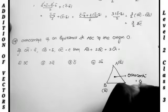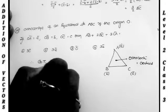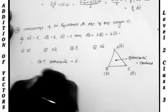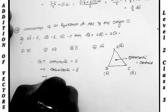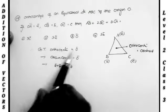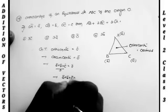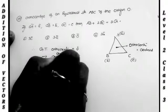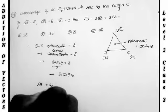Since this is an equilateral triangle and the orthocentre equals zero, the circumcentre also equals zero. The circumcentre formula is A bar plus B bar plus C bar by 3. Setting circumcentre to zero implies A bar plus B bar plus C bar equals zero, so B bar plus C bar equals minus A bar. We use this condition to solve the question.